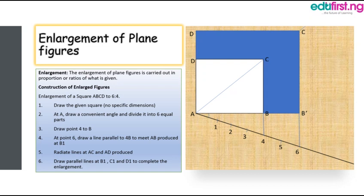The fifth step is to radiate lines at AC and AD produced — that is, extend line AD and extend line AC. At all the points from C, draw vertical lines to join B1 and C1, then draw a horizontal line to connect to D1. And as simple as that, you have enlarged the square to the new value given.